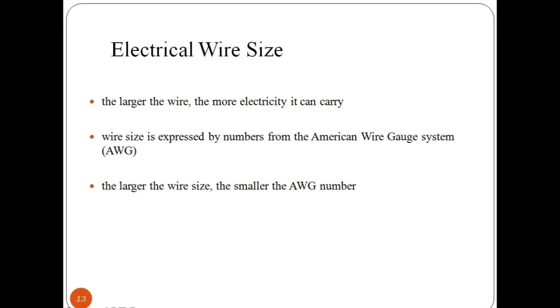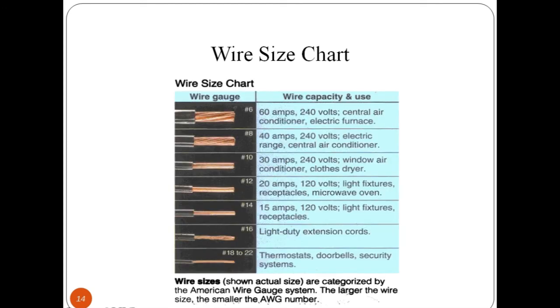Moving on further, let us study sizes of wire that are available for use in many applications. Wire size is expressed by number from American Wire Gauge system. The larger the wire size, the smaller will be the American Wire Gauge number. You can see the chart which explains the size of conductor with their capacity and uses.